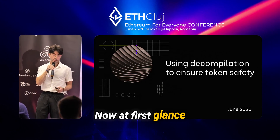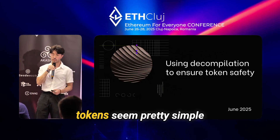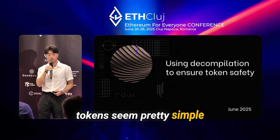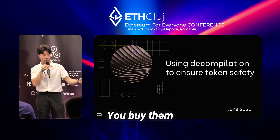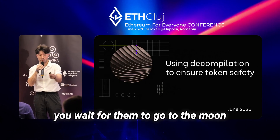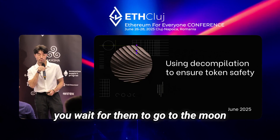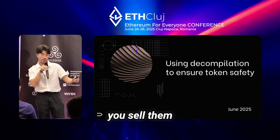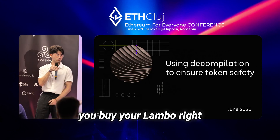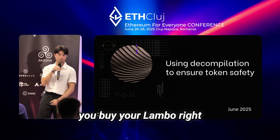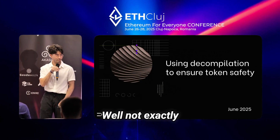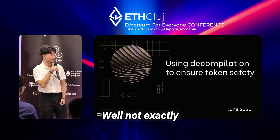At first glance tokens seem pretty simple. You buy them, you wait for them to go to the moon, you sell them, you buy your Lambo. Well, not exactly.